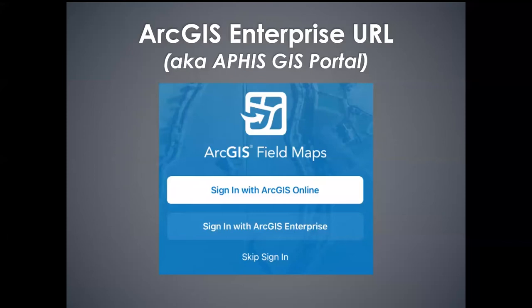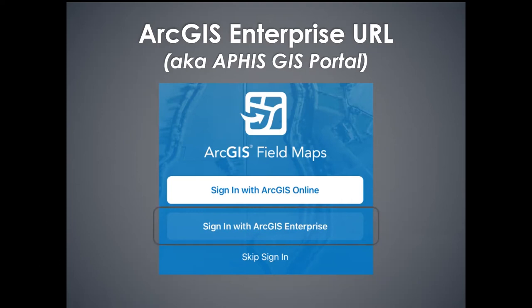When you tap to open the Field Maps application the first time, you'll see an option to sign in with ArcGIS Online or sign in with ArcGIS Enterprise. Here at PPQ, we always choose the Enterprise option. That enterprise portal is protected — FedRAMP moderate, secure — and we can enter PII safely and responsibly. So we always go into enterprise. That's where our map is hosted.